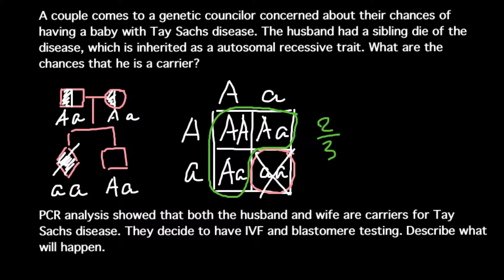Next question: PCR analysis shows that both the husband and wife are carriers for Tay-Sachs disease. They decide to have IVF and blastomere testing. Describe what will happen in the first step of the procedure. The female would be treated with hormones so she can produce as many egg cells as possible — usually between ten and twenty. The male wouldn't get any hormone treatment because males can produce billions of sperm every day. When the egg cells are fertilized and allowed to multiply, on day three or five one cell is taken for genetic testing, and only those embryos that are phenotypically normal would be transferred to the uterus.